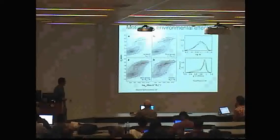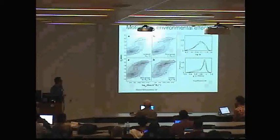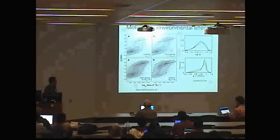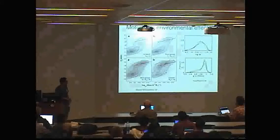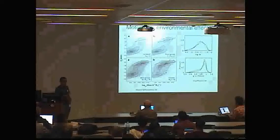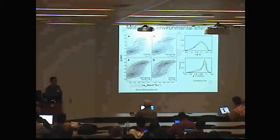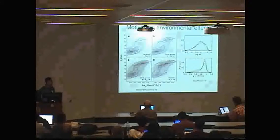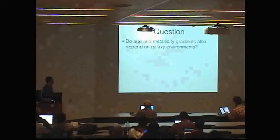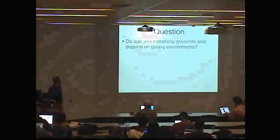People have known that galaxies formed in different environments have different overall properties. For example, this one shows the DN4000 versus stellar mass in different environments, from mostly isolated to cluster environments. As you can see, the distribution of galaxies are very different for different environments. But one of the questions I want to ask is, do the age and metallicity gradients also depend on galaxy environments?